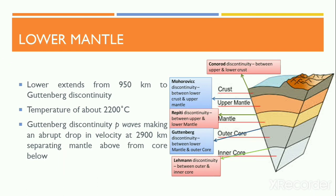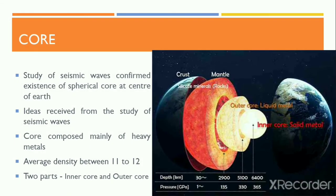The discontinuity between the upper and lower mantle is termed the Repetti discontinuity. The P waves make an abrupt drop in velocity at 2,900 kilometers deep inside the Earth, forming a discontinuity that separates the mantle above from the core below, which we term the Gutenberg discontinuity.